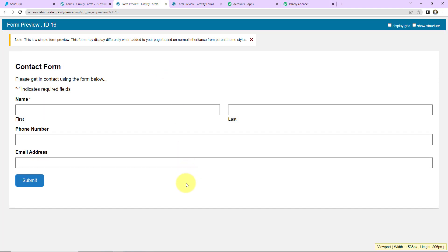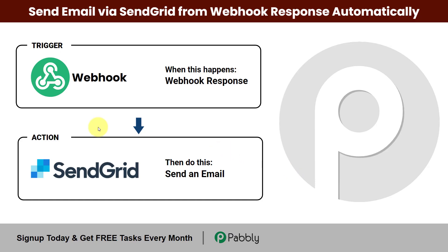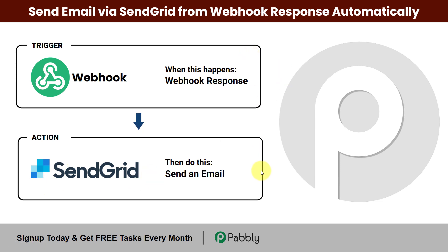So the moment this form is filled, then automatically with the help of SendGrid you can send an email to the user. Here your trigger will be Webhook by Pabbly and your action application will be SendGrid. To understand how you can do this yourself — integrate and automate this process — let's start.